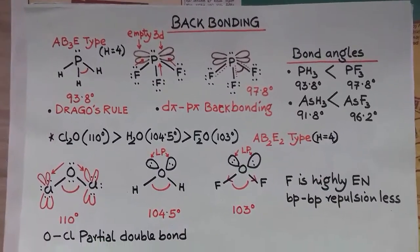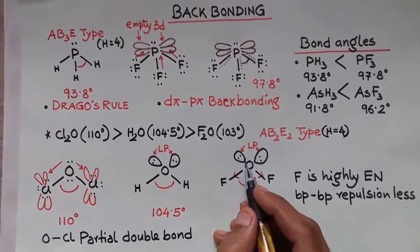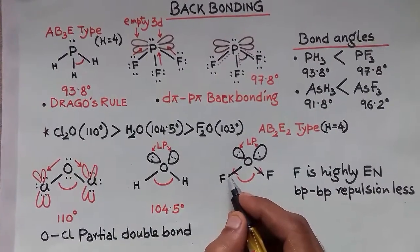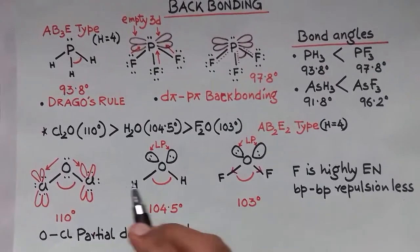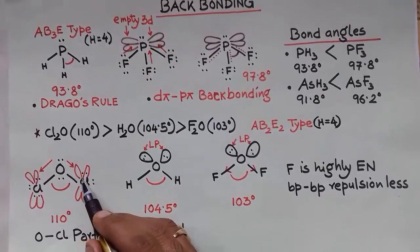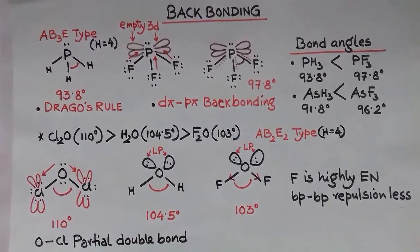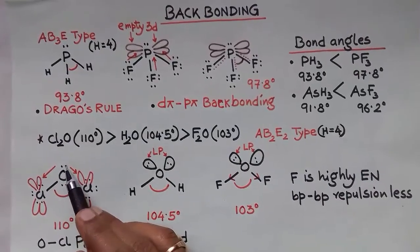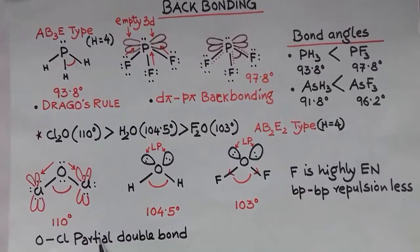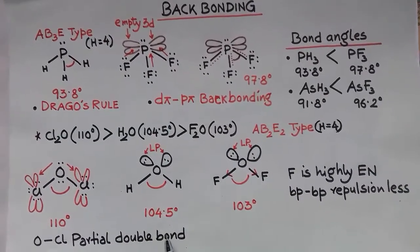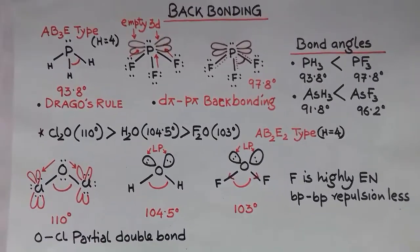In case of fluorine, all bonding pairs are attracted towards fluorine and bond pair-bond pair repulsion is less. But in case of chlorine, chlorine has vacant d orbitals. Oxygen atom with two lone pairs is acting as donor. Then O-Cl bond has partial double bond character, and again double bond-double bond repulsion increases the bond angle to 110.